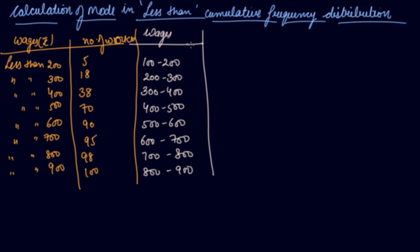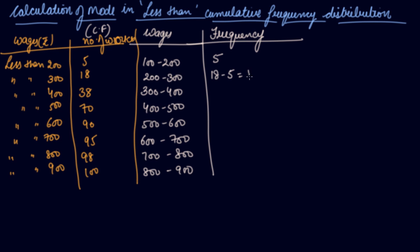Now you have to convert the cumulative frequency into the normal frequency. From 100 to 200 there are 5. Less than 300 includes 100 to 200 and 200 to 300, but we need 200 to 300 only, so we subtract 5 from 18. Next, we subtract 38 minus 18.